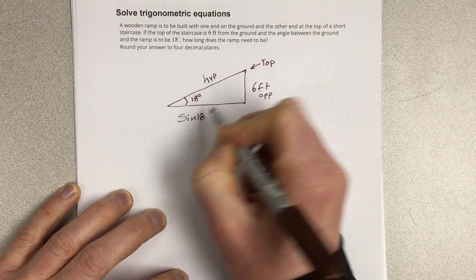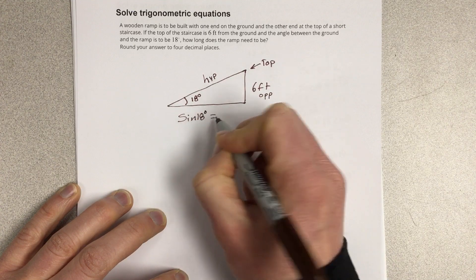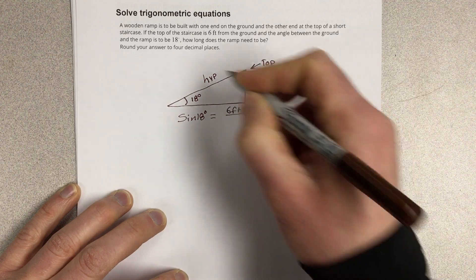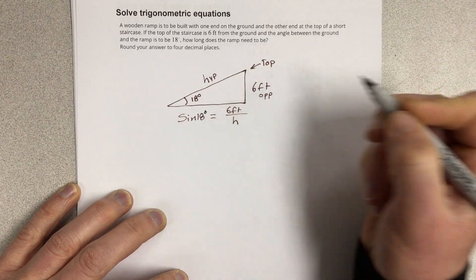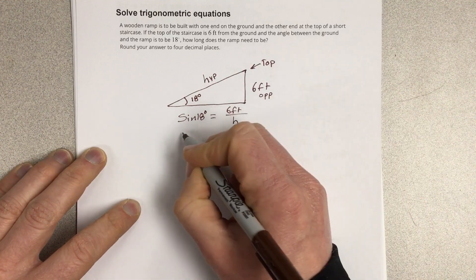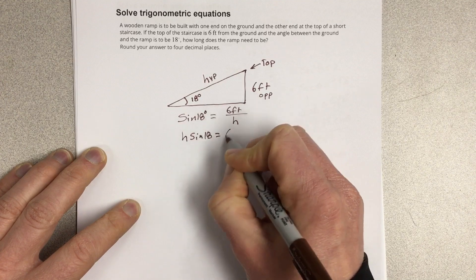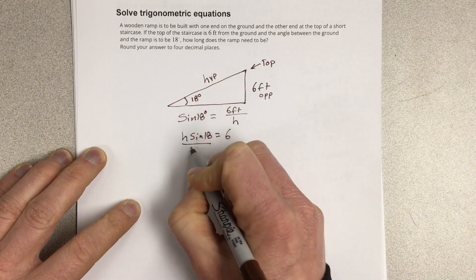Sine 18 degrees is going to equal the six feet over h. To figure this out, we multiply by h. So we've got h sine 18 equals six, and we're going to divide by sine 18.